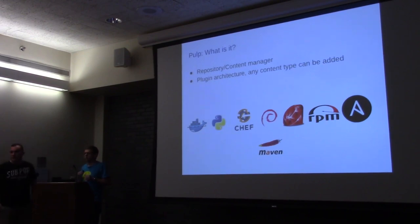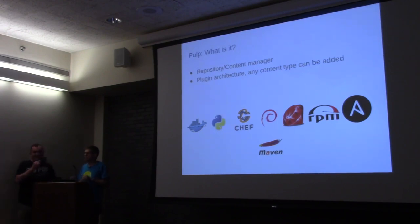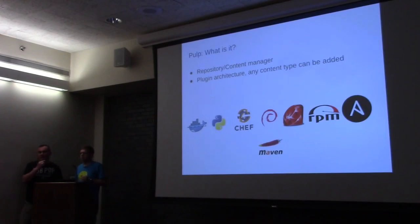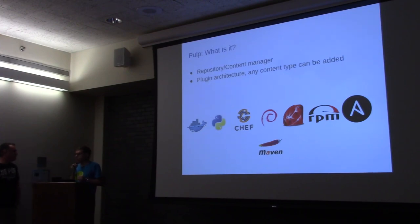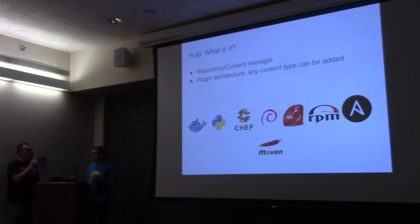Is Puppet Forge mirroring and hosting support something coming to PULP 3 anytime soon? We don't have any plans for it right now, but if a community member were to implement it, that would be great. We might do it eventually, but it hasn't been started yet. Not all these plugins are developed by us — probably two or three are community-developed right now. The Chef, Debian, and Ruby Gem plugins aren't developed by Red Hat or anyone employed by Red Hat.